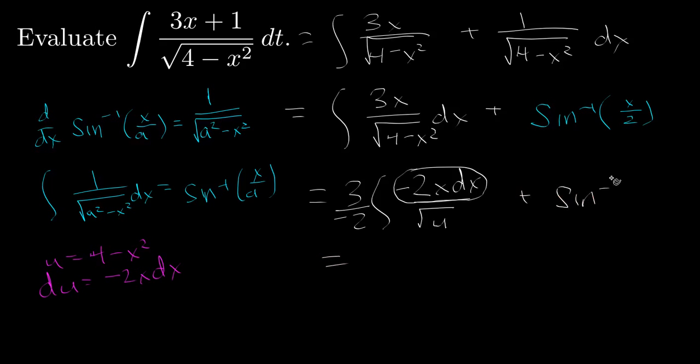Okay, and then I have my arc sine function, and now I have negative 3 halves, the integral of, this is du, and I'm going to rewrite the square root as u to the minus 1 half power, instead of writing 1 over the square root. Plus the inverse sine of x over 2.